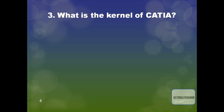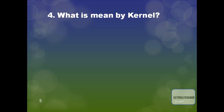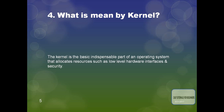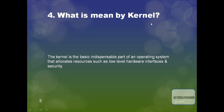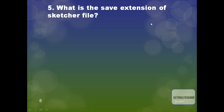The third question is: what is the kernel of CATIA? The kernel of CATIA is CGNext. The fourth question is: what is meant by kernel? The kernel is the basic indispensable part of an operating system that allocates resources such as low-level hardware interfaces and security.